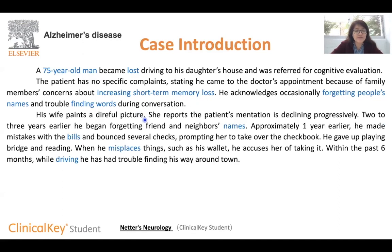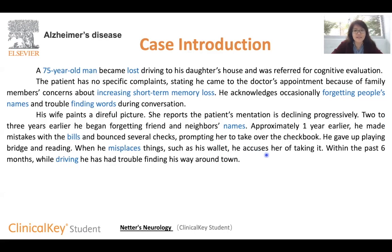However, his wife gives a more serious account. She said that the patient's mentation has been declining progressively. Two to three years earlier, he started to forget friends' and neighbors' names. One year earlier, he made mistakes with bills and gave up playing bridge and reading. In one particularly distressing occasion, he lost his wallet and accused his wife of taking it. And within the past six months while driving, he had trouble finding his way around town.